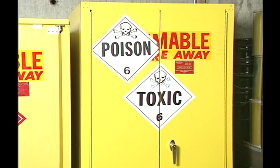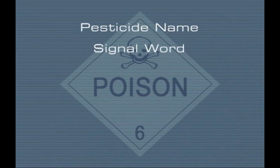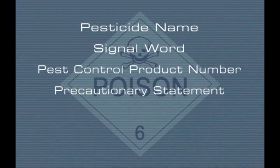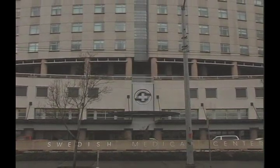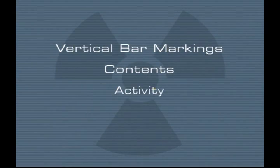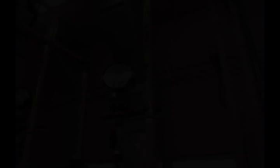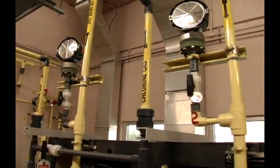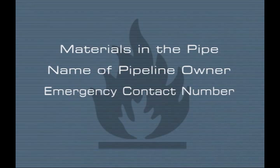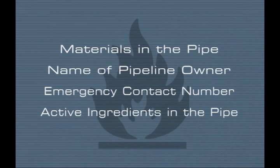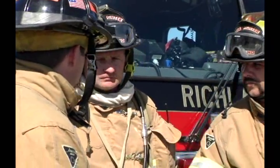Facilities that store pesticides use the 704 system and are required to list the name, signal word, pest control product number, precautionary statement, hazard statement, and active ingredients. When responding to a facility that uses radioactive materials such as a hospital, you need to recognize their vertical bar markings, contents, activity, and transport indexes. For pipeline incidents, look for markings that indicate the types of materials in the pipe, the name of the pipeline owner, an emergency contact number, and the active ingredients within the pipe. Finding markings on buildings and pipelines are crucial steps in determining scene safety.